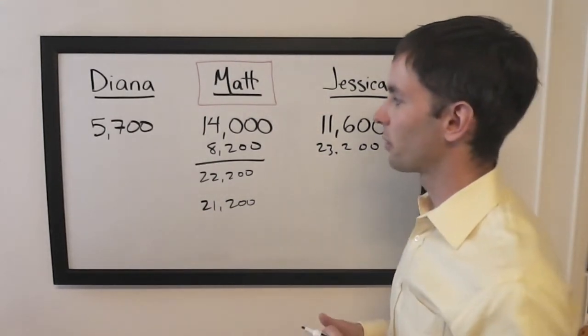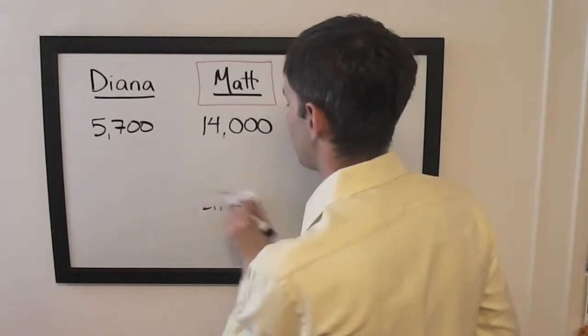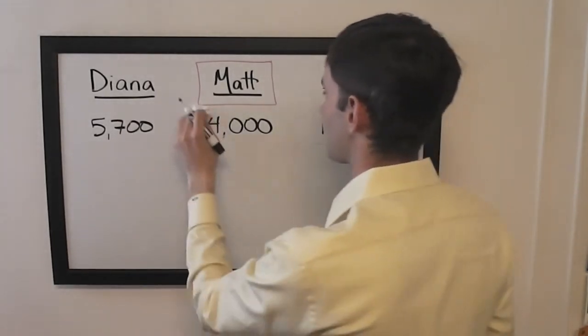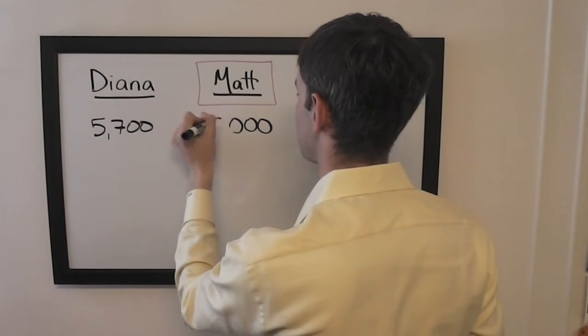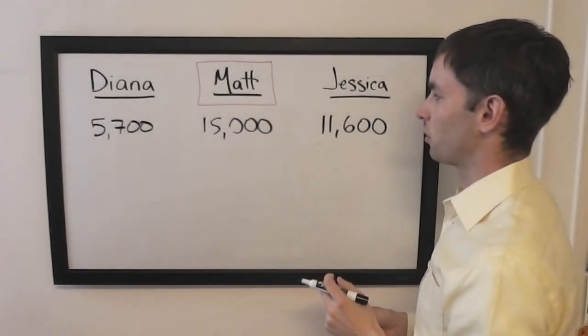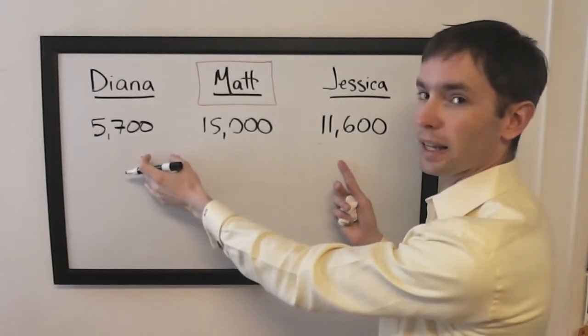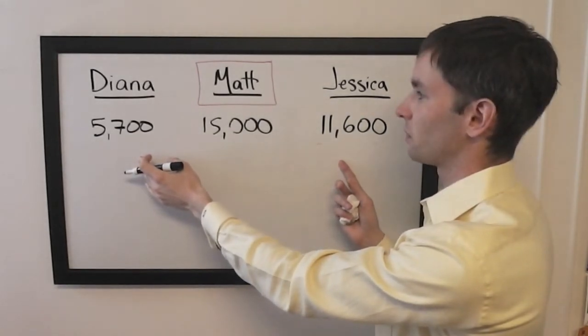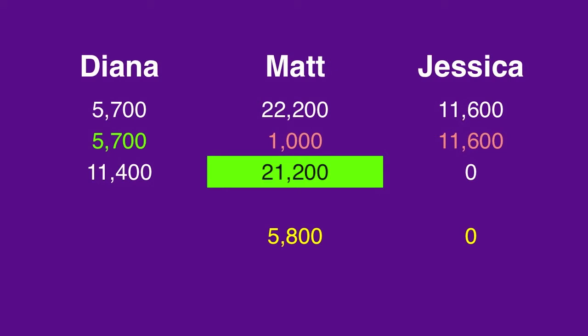As we saw with his $1,000 wager, even if he got it right, he would still have 15,000. And not only does he have to get it right to win, he's got both Diana and Jessica in contention. With that larger amount, Diana's out of it, and he only has to worry about him getting it wrong and Jessica getting it right.